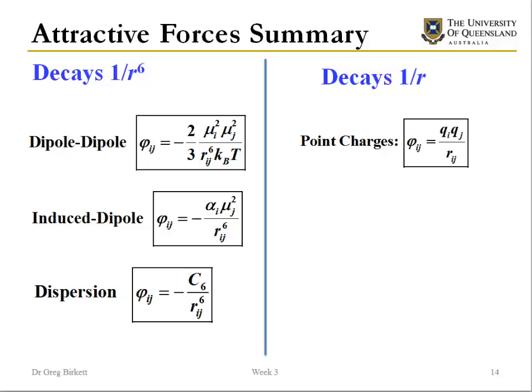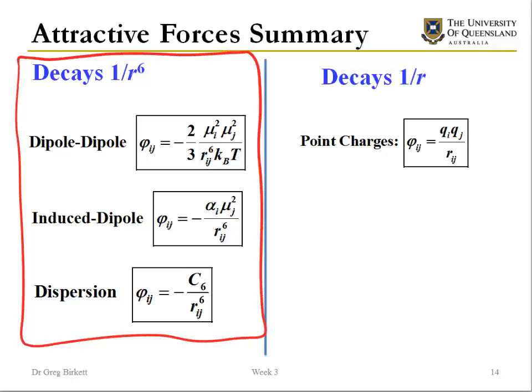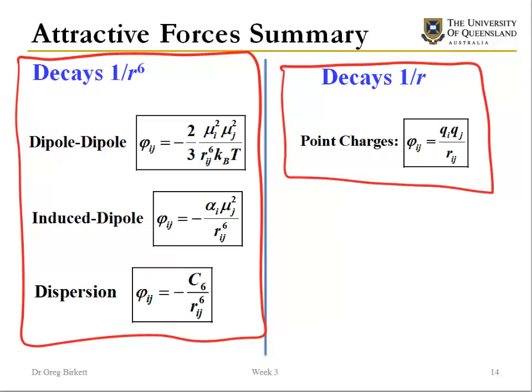Summarising, we have a class of interactions — dipole-dipole, induced dipole, and dispersion — that all decay as 1/R⁶. On its own is the Coulomb interaction between point charges. So for molecules that don't carry a point charge and are reasonably far apart, there is a consistent set of equations all proportional to 1/R⁶, where R is the separation between molecules i and j. This consistency suggests we might be able to combine them into a single model.